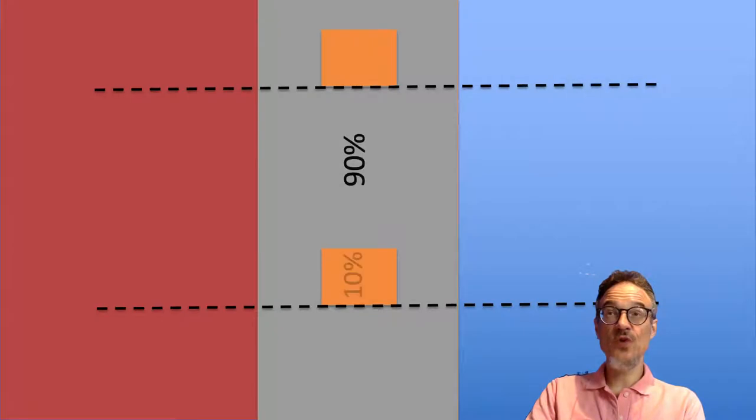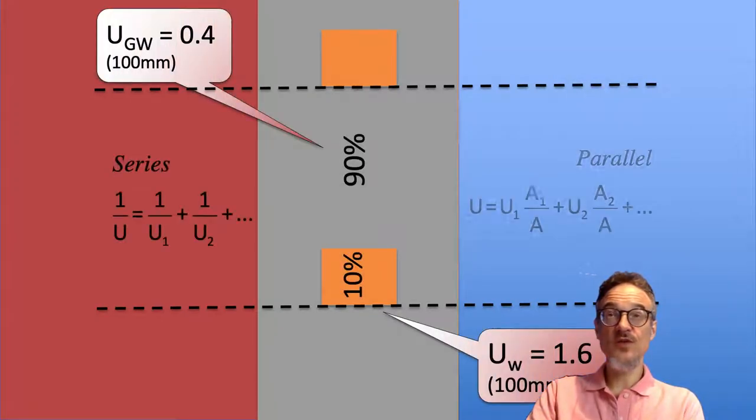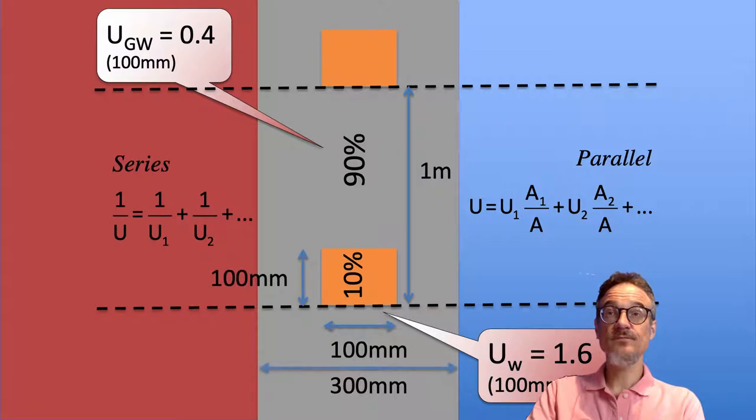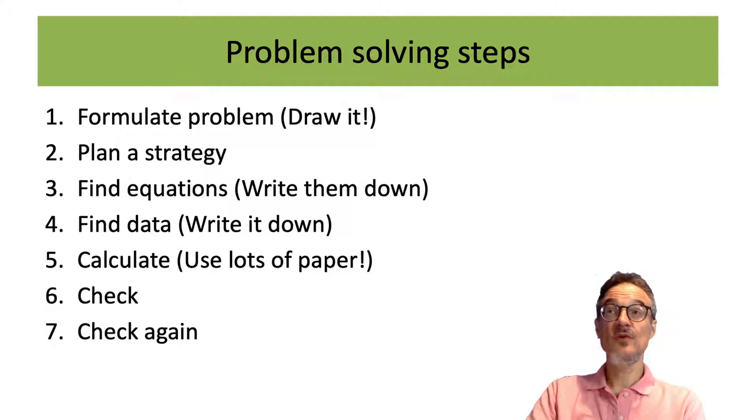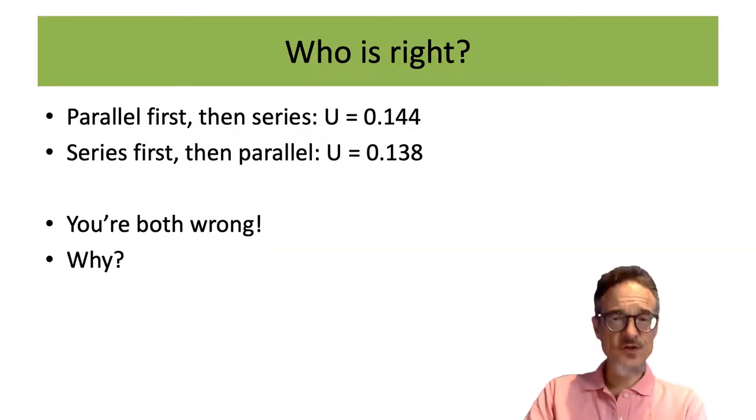And those were the quantities, the data. Hopefully you followed these steps to work out what the calculations were. And what we're going to find is that there are two different answers. There's a different answer depending on whether you do parallel first or series first. There's not a huge difference, but they're not the same. It's not the same answer. And this is a bit strange.